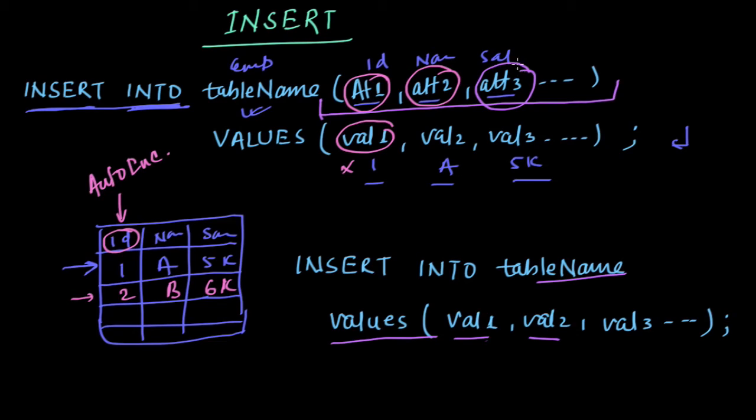When we will not write this column and we will not write this corresponding value. But here in this case we cannot do that. We have to provide values for all the attributes, all the columns. So this is what the difference is.